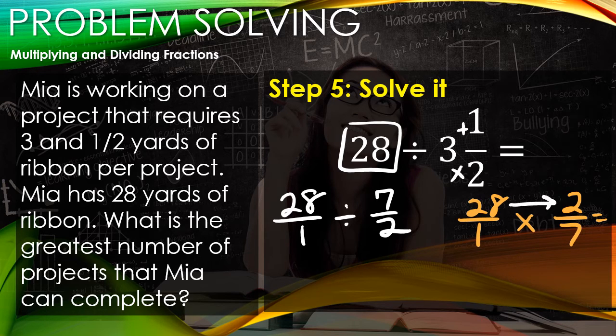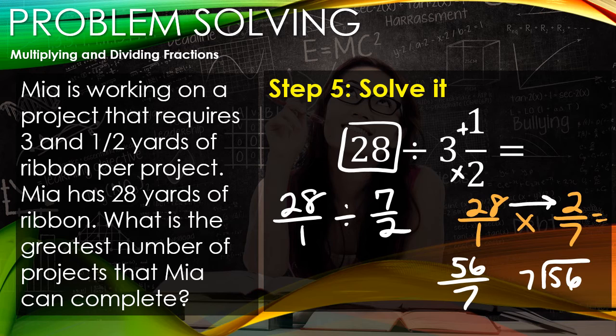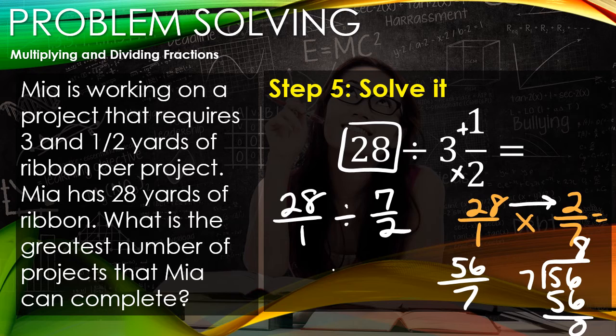28 times 2 gives us 56 over 7. To figure out what this improper fraction is as a mixed number: 7 goes into 56 eight times. 8 times 7 is 56 with 0 remainder. So the number of projects she can complete is 8 total projects.